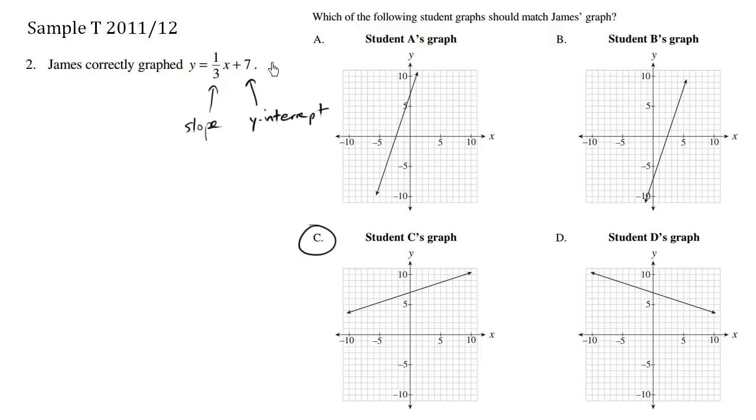Just to verify the y-intercept, positive seven. When x equals zero, we should be crossing this y-axis at the value seven. And in this case, we see this is seven. So this here indeed is choice C.